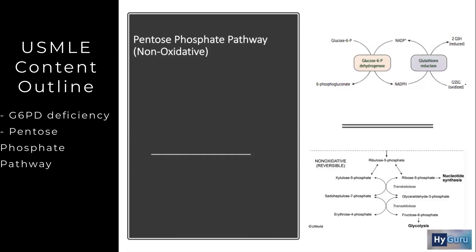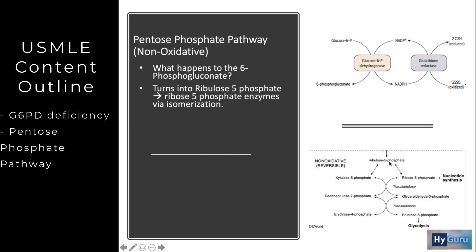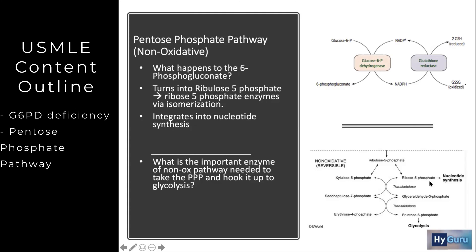Building on this concept, the pentose phosphate pathway has a non-oxidative branch. What we just discussed was the oxidative branch. Going back: the 6-phosphogluconate turns into ribulose-5-phosphate, and this big picture ends up being the backbone of nucleotide synthesis. That's why after studying the non-oxidative pentose phosphate pathway, you should move on to study purine and pyrimidine synthesis, because ribose-5-phosphate integrates into nucleotide synthesis.